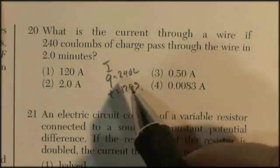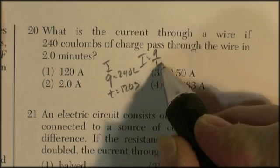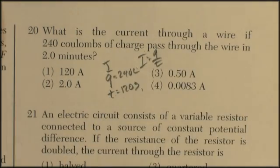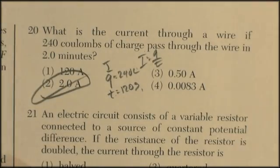So they're looking for current. It's Q divided by T. So I'm looking for Q divided by T. Current is Q divided by T. 240 divided by 120. 240 divided by 120, that's 2. Looks like 2 amps.